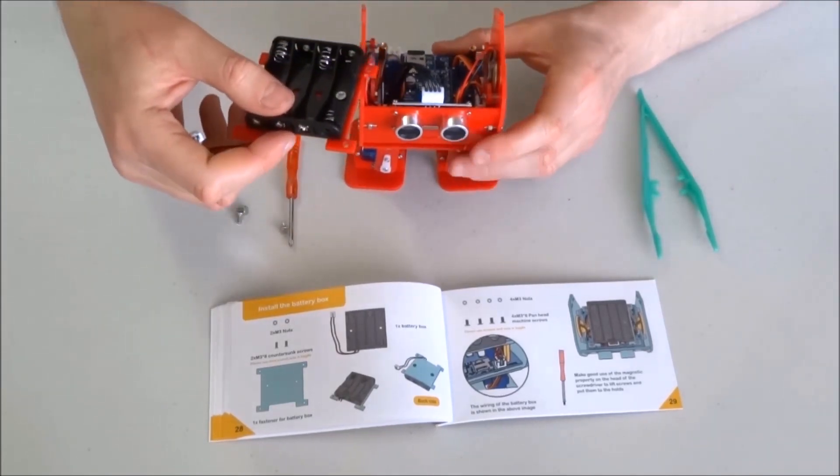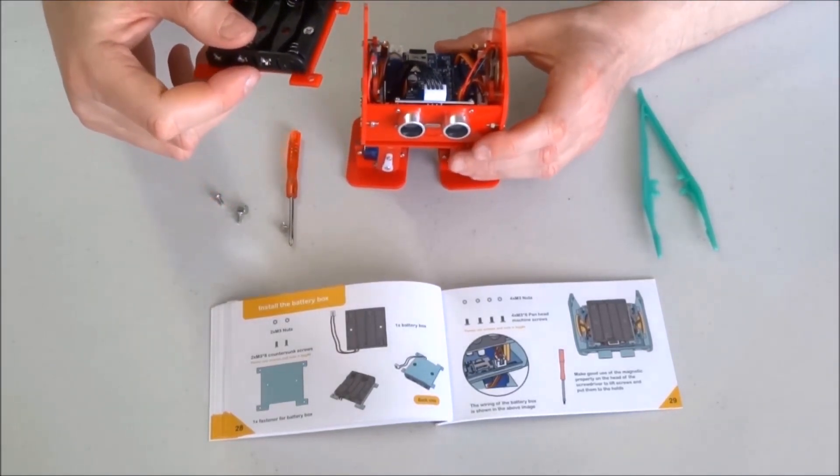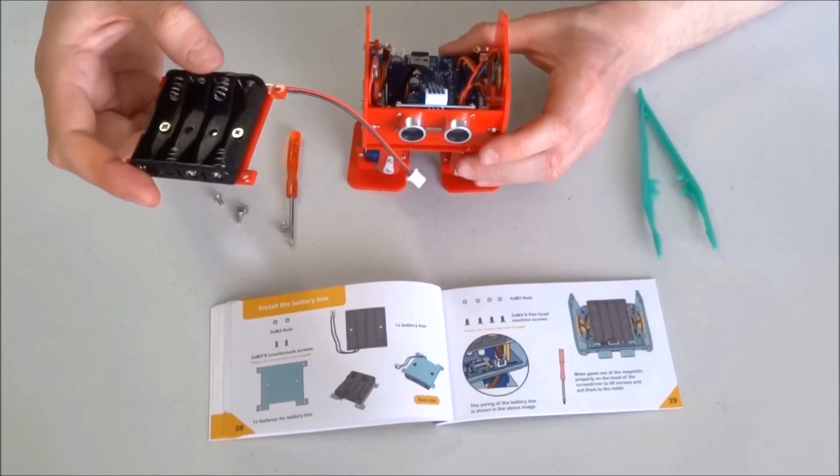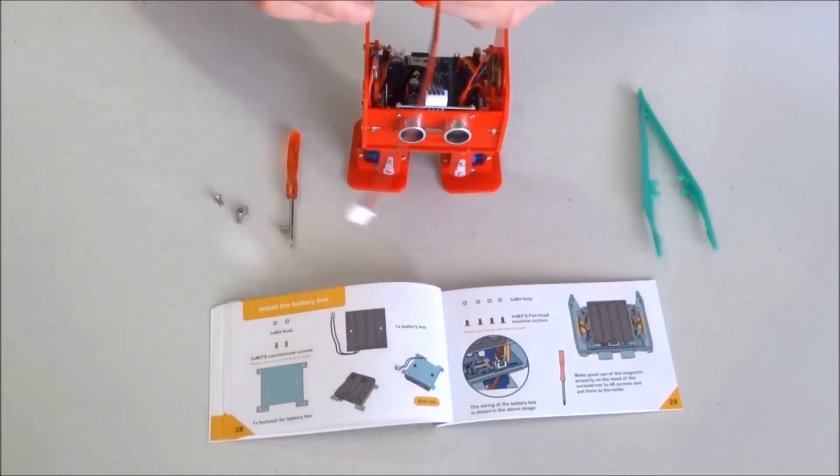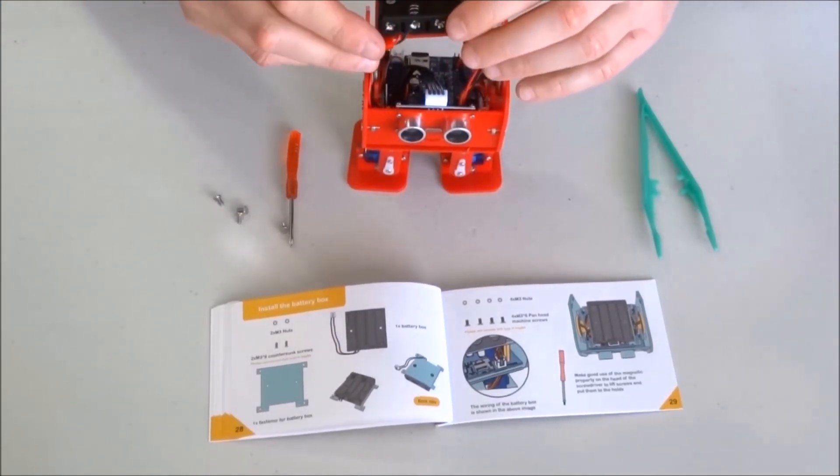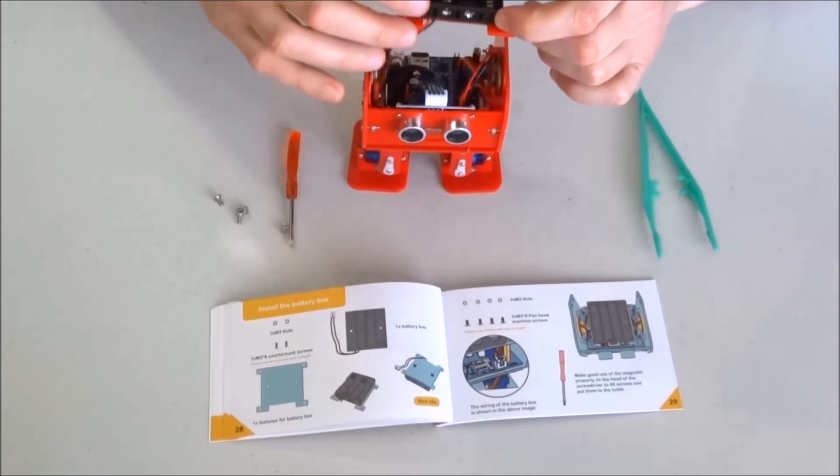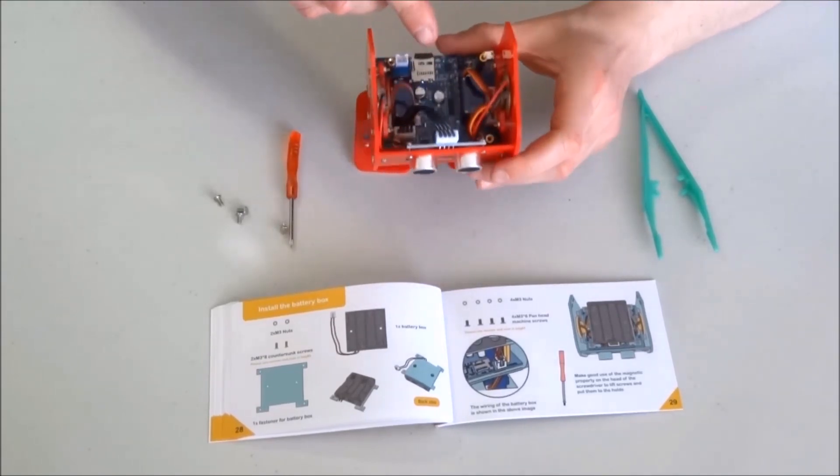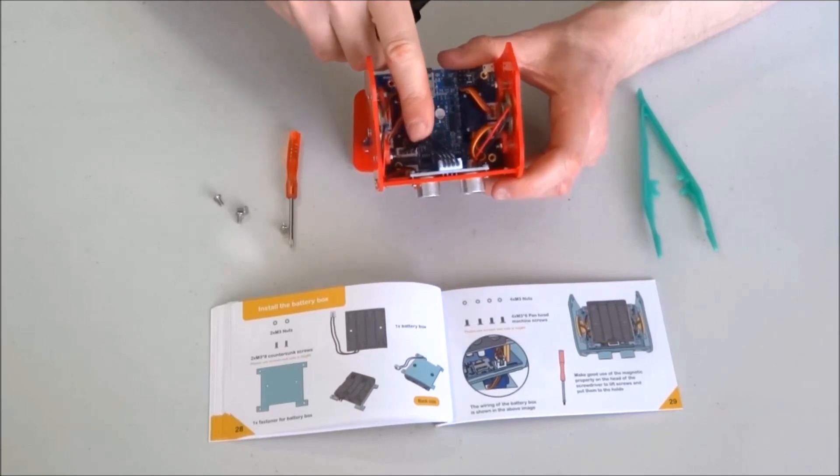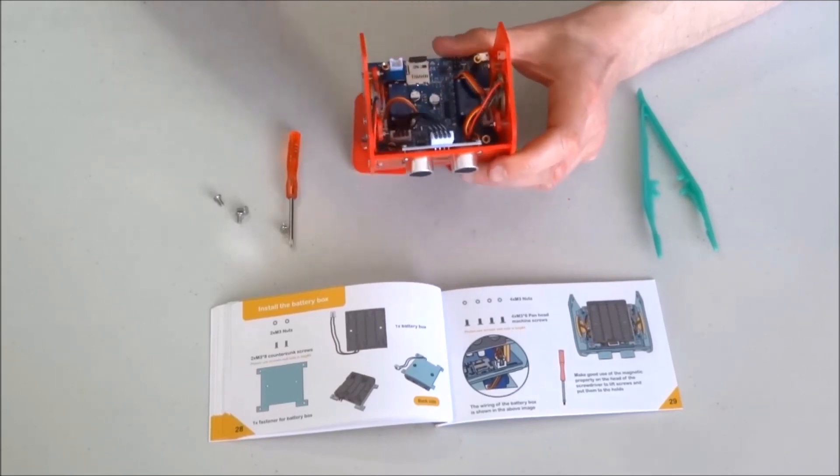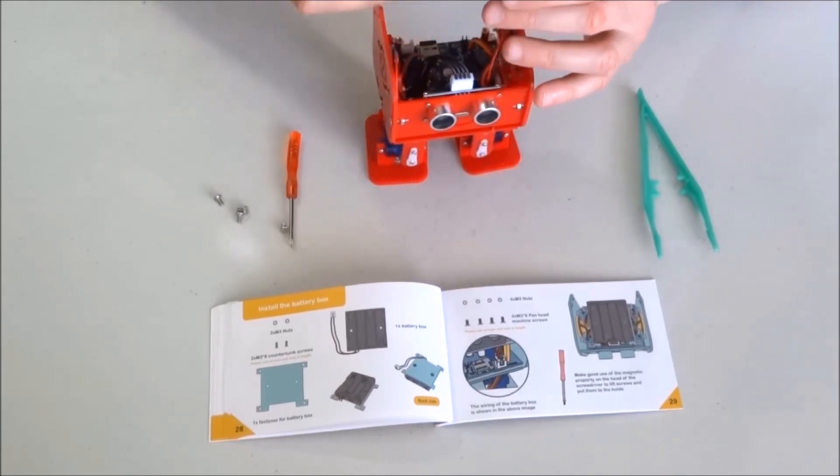Take the battery box and orient it with this cut area toward the ultrasonic ranger, so it will allow the cable from the ultrasonic ranger to go through.